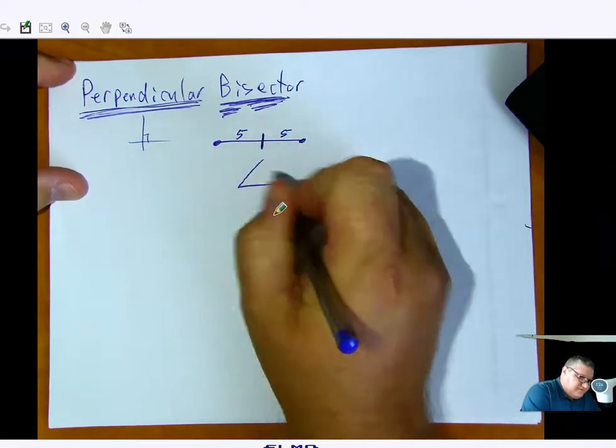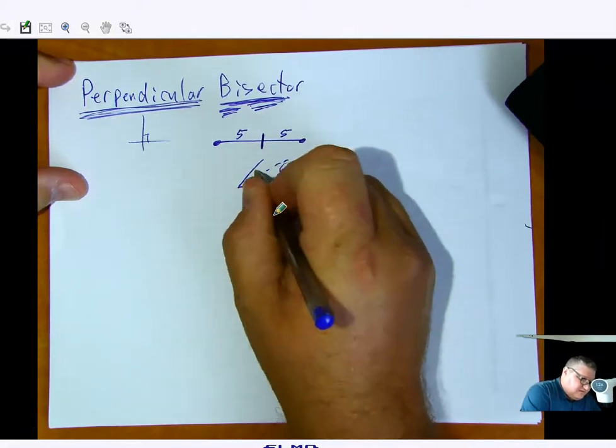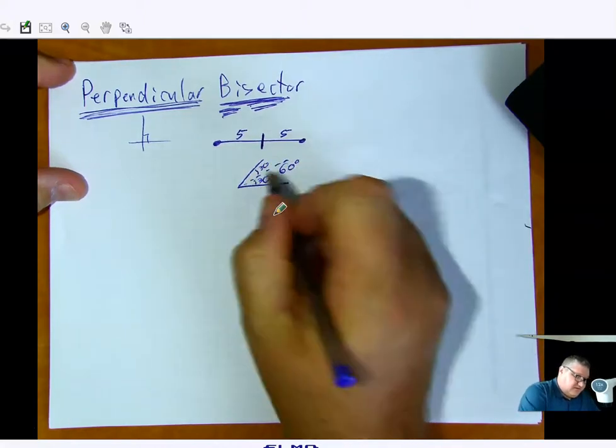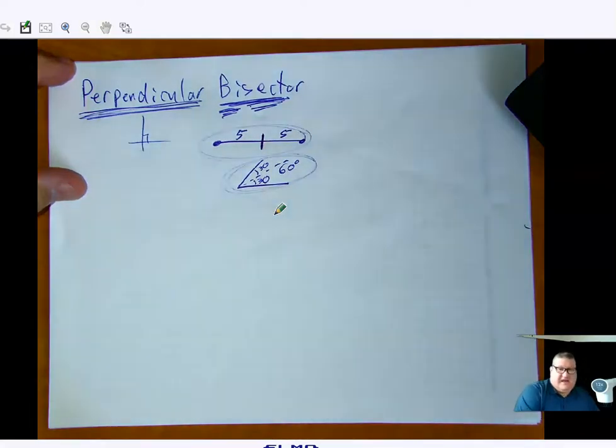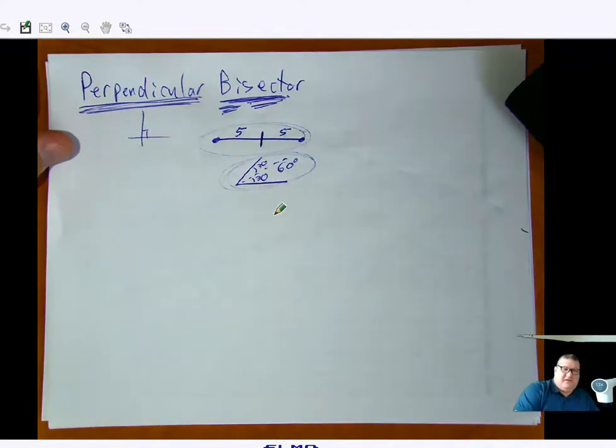Or if it's an angle, let's say it's a 60 degree angle, a bisector would break it up into 30 and 30. So this would be a segment bisector, this would be an angle bisector.